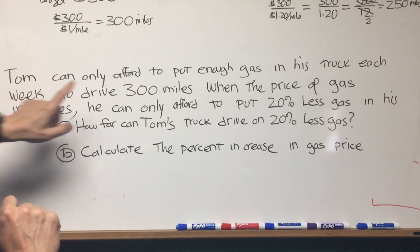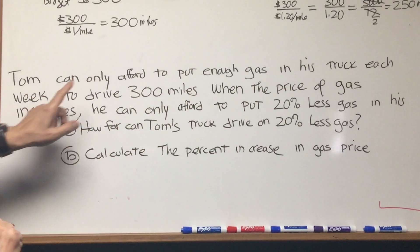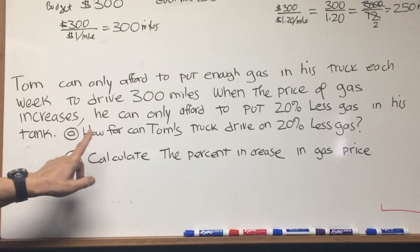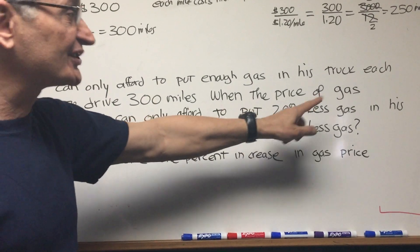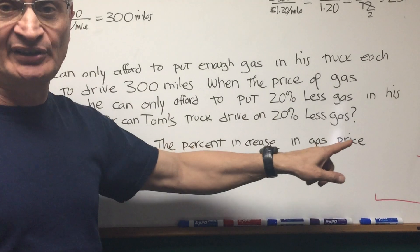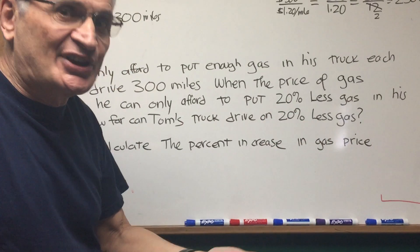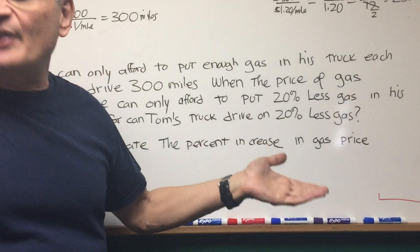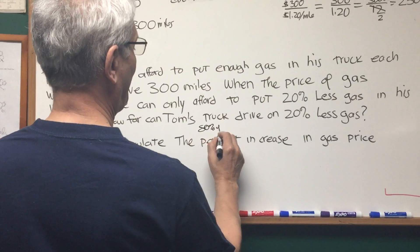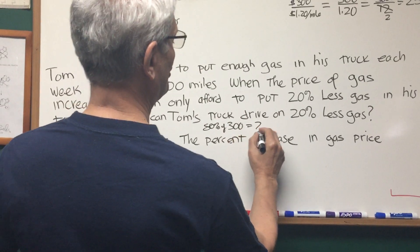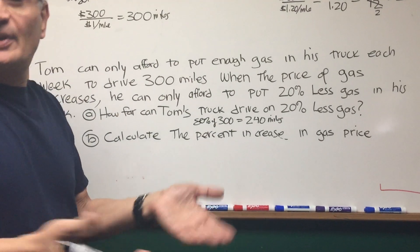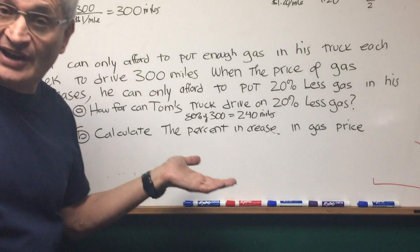Let's read the second problem. Tom can only afford to put enough gas in his truck each week to drive 300 miles — same as the first problem. When the price of gas increases, he can only afford to put 20% less gas in his tank. How far can Tom's truck drive on 20% less gas? Well, that's an easy one. He got 20% less gas, so he can only drive 20% less. The answer is 80% of 300, or 240 miles. That's fairly straightforward — 20% less gas, 20% less miles he's able to drive.